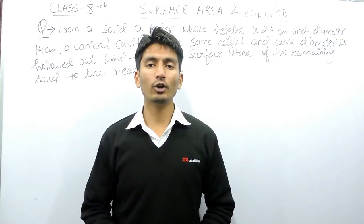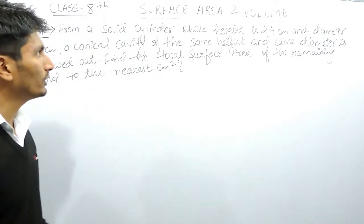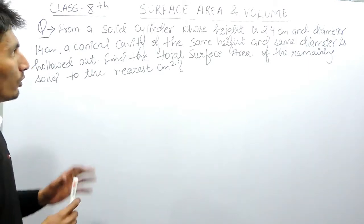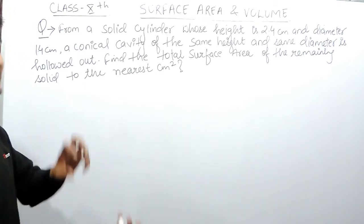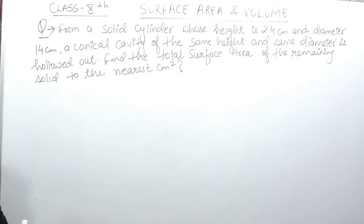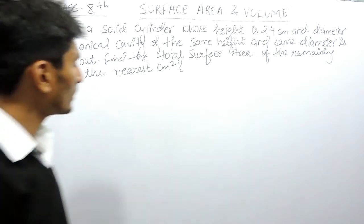Hello everyone, we are from TRUMAX and in this video we are going to discuss the second type, where this is based on the combination of two figures but one figure is inside the other. The question says: from a solid cylinder whose height is 2.4 cm and diameter is 1.4 cm, a conical cavity of the same height and the same diameter is hollowed out. Find the total surface area of the remaining solid to the nearest cm².